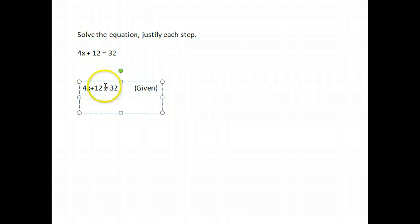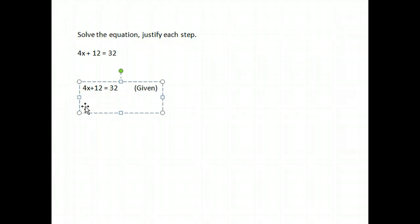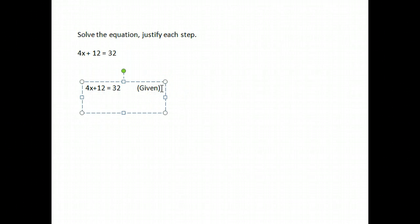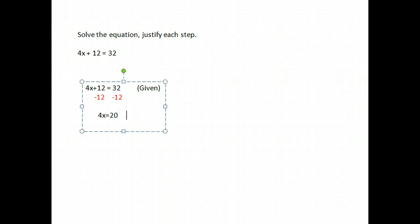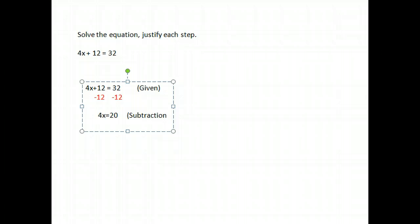How would we solve that? We have 4x plus 12 equals 32. The first thing we do: we have a plus 12, so we subtract 12 from both sides. Usually when giving justifications, you leave out the in-between working steps. Subtracting 12 from both sides gives us just 4x on one side and 20 on the other. Our reason — why we could subtract 12 from both sides — is the subtraction property of equality.